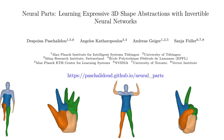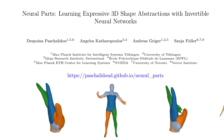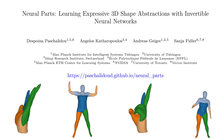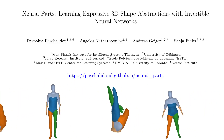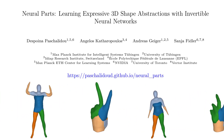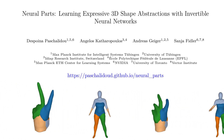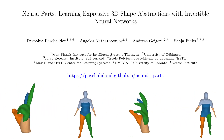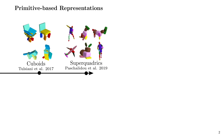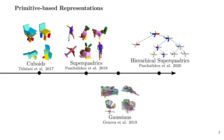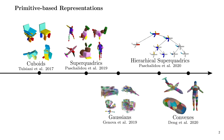Hello, I'm Despina and today I'm happy to present our work Neural Parts: learning expressive 3D shape abstractions with invertible neural networks, a joint work with Ángelos Catharopoulos, Andreas Geiger, and Sanya Fiedler. Existing primitive-based representations seek to infer semantically consistent part arrangements across different objects and provide a more interpretable alternative compared to more powerful implicit representations.